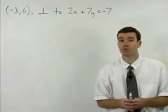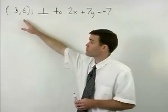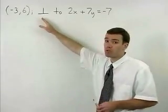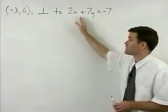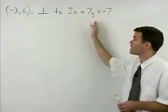Now we're asked to write the equation of the line that passes through the point (-3, 6) and is perpendicular to the line that has the equation 2x + 7y = -7.